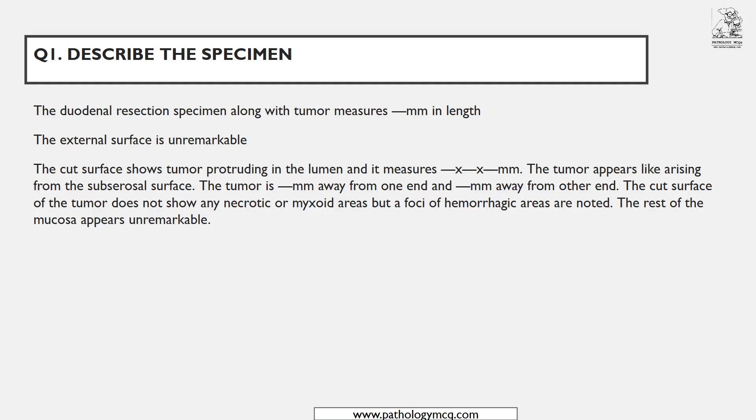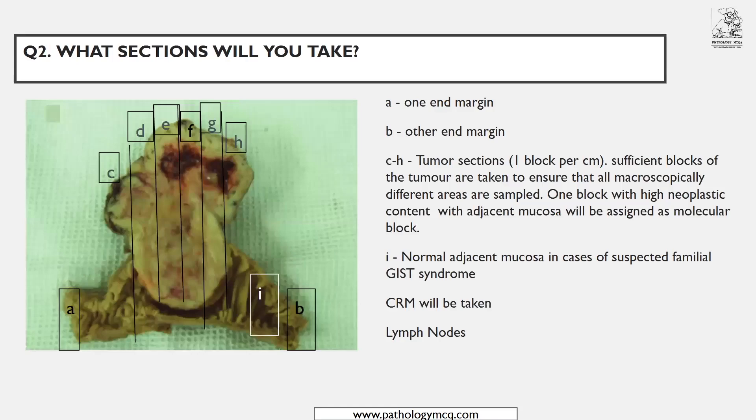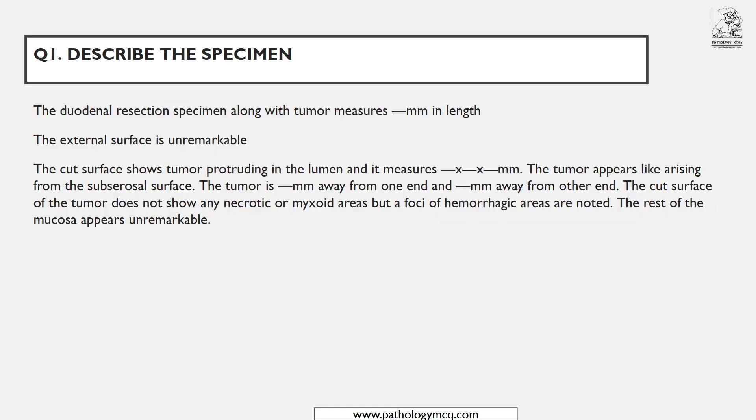Unless you have a specimen in hand it is hard to tell exactly, so give an approximate answer so the examiner knows you are trying — that is a clue to fetch marks. Note the tumor's distance from each end. The cut surface shows no myxoid changes but foci of hemorrhagic areas are noted. The rest of the mucosa appears unremarkable — that should also be mentioned.